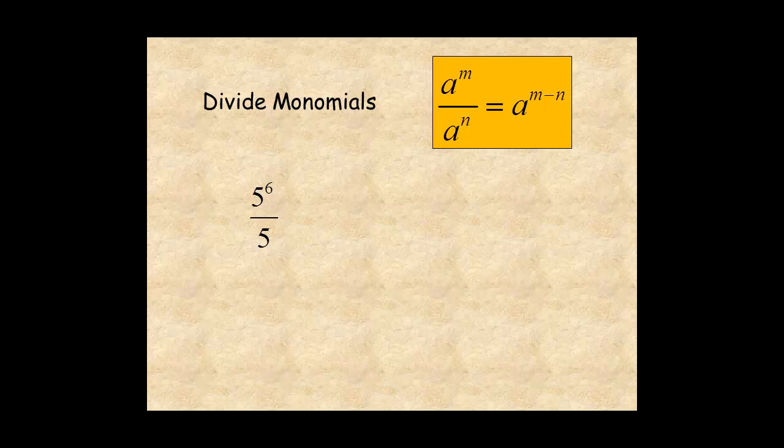For this example, 5 to the power of 6 over 5, subtract the exponents 6 minus 1 for 5 to the power of 5, which equals 3,125.